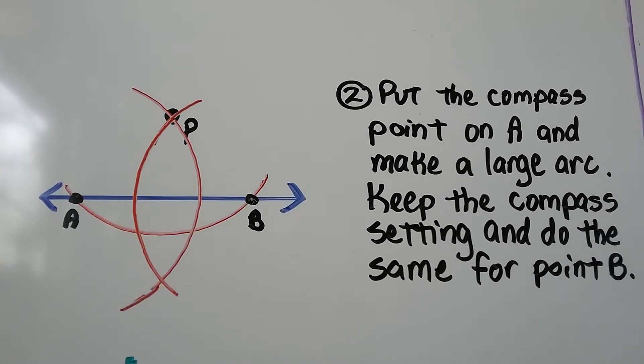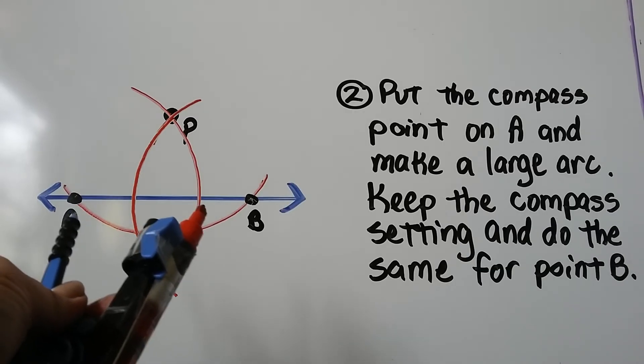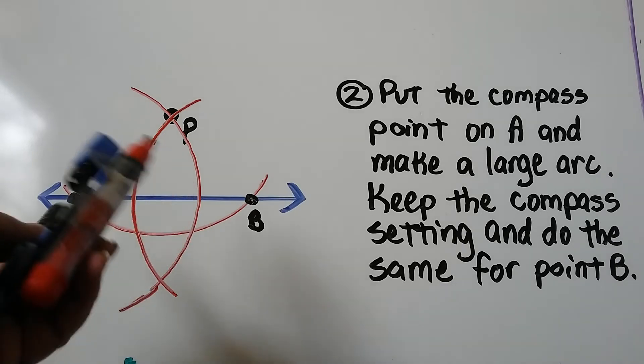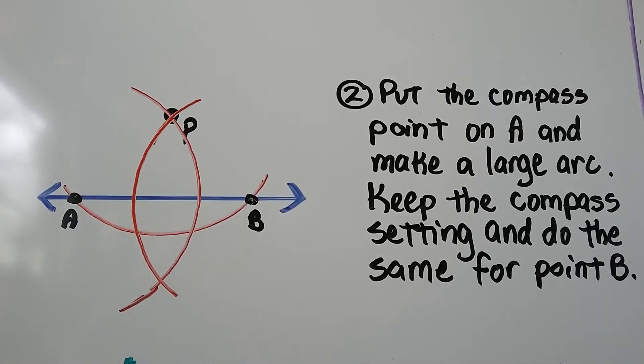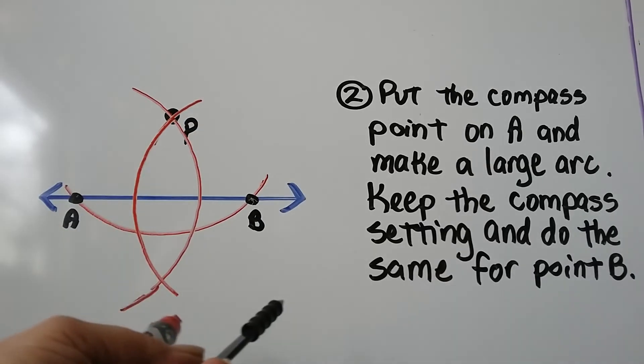Now put the compass point on A, setting it a little more than halfway between A and B. With the point on A, make a large arc. Keep the setting, put the point on B, and make a large arc.